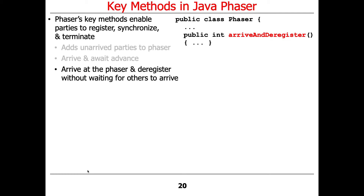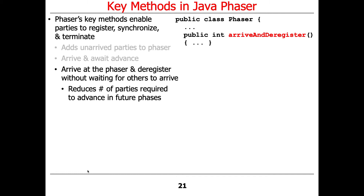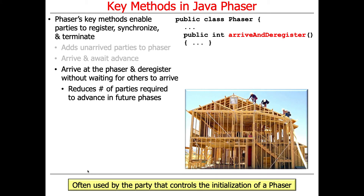There's also a method called arriveAndDeregister(), which says 'I'm here, but deregister me so I'm not included in the count of parties needed to advance to the next phase.' This reduces the number of parties required to advance in future phases. It's usually used by the main thread that wants to block everybody at startup, but then wants to say 'okay, I'm here — don't include me henceforth.' It's often used by the party that controls the initialization of a phaser.